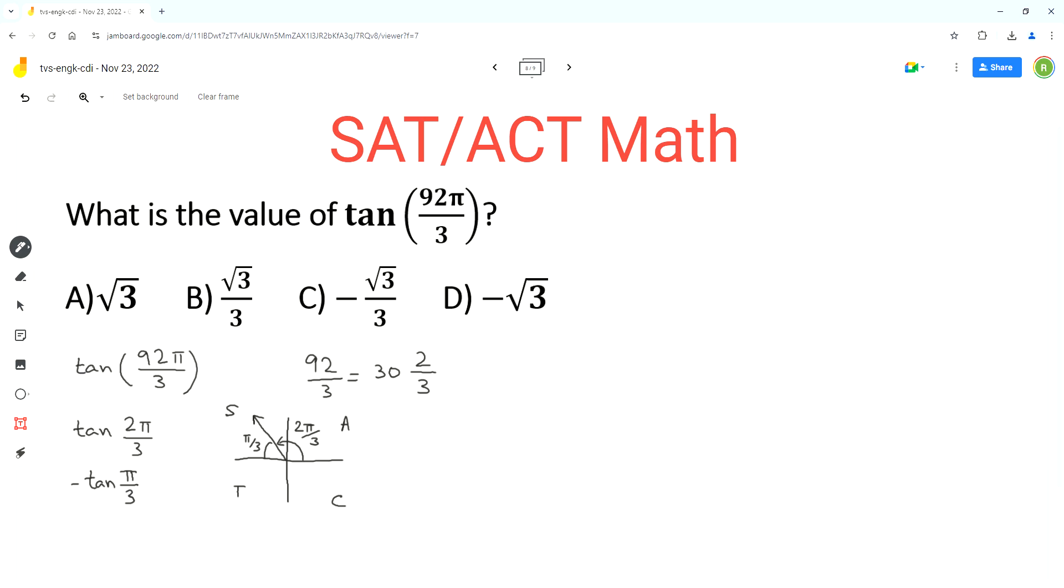Tan π over 3 is equal to square root of 3. We can find this using the unit circle or the special triangle.